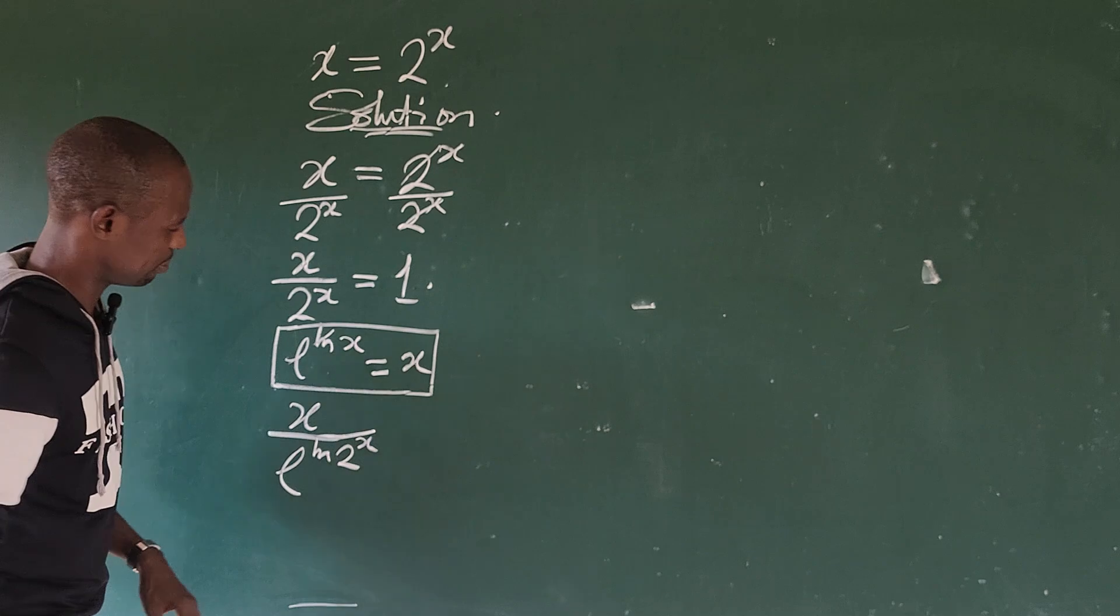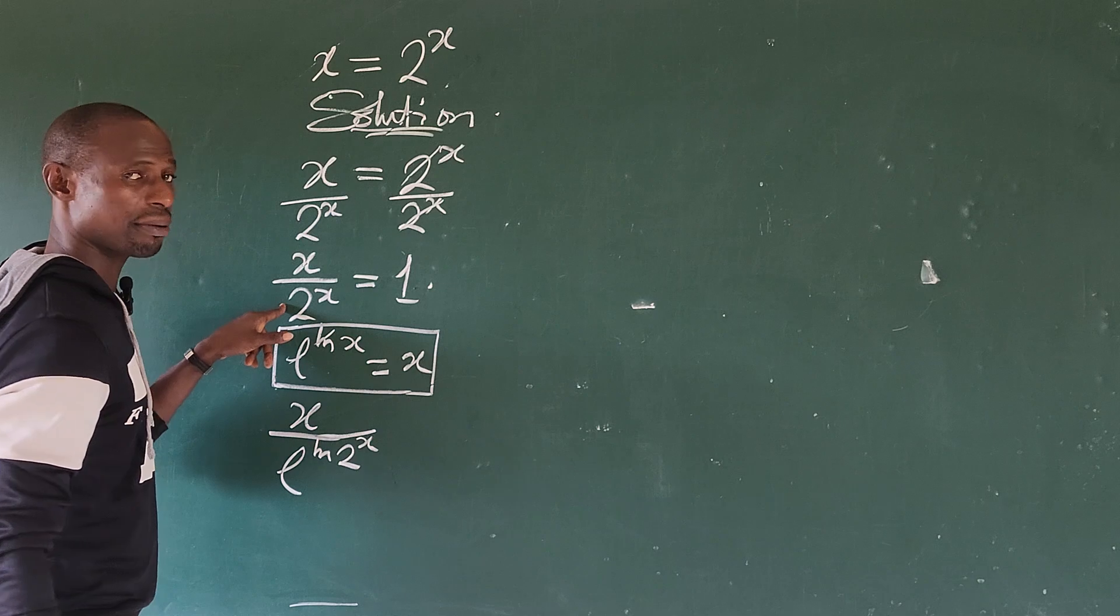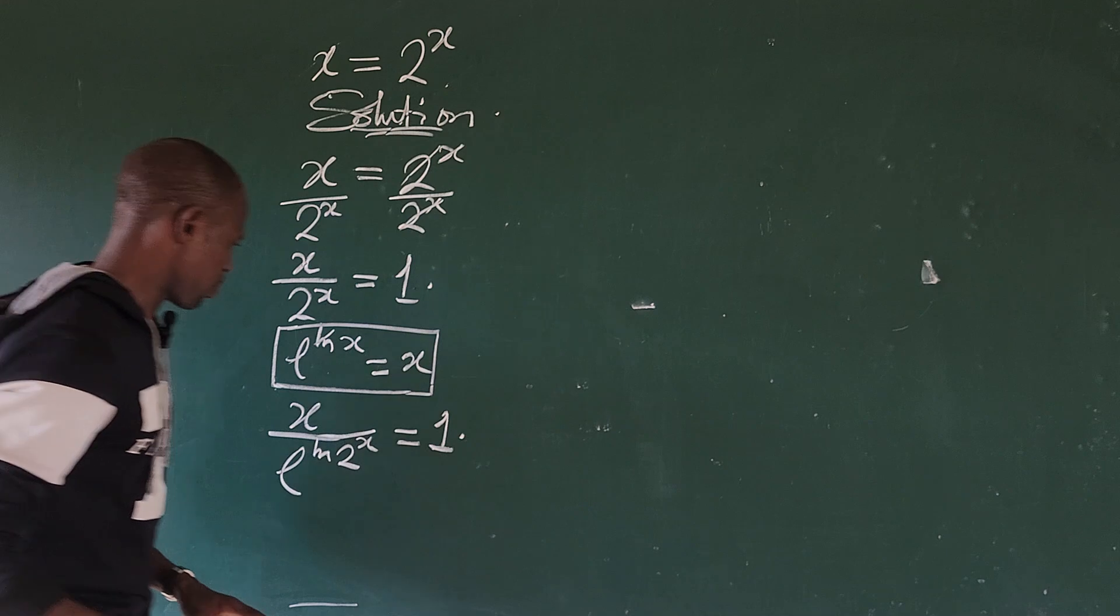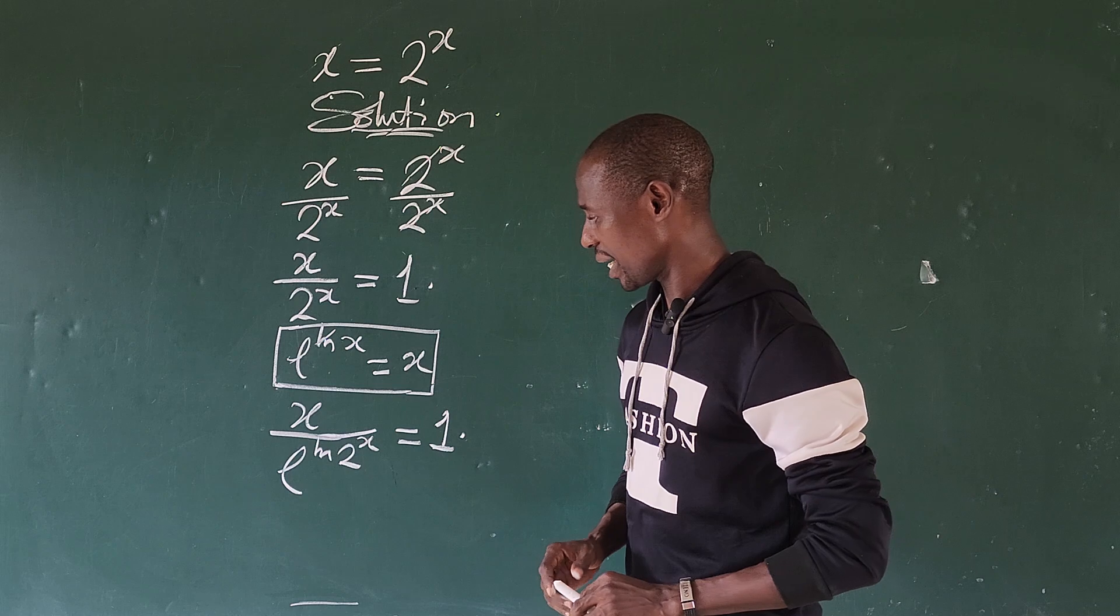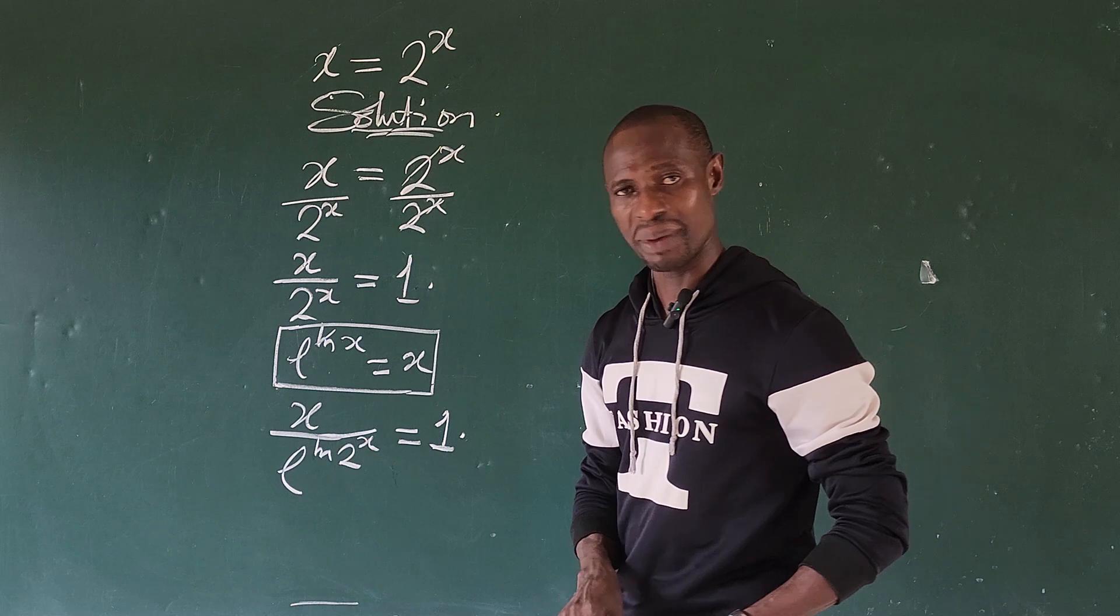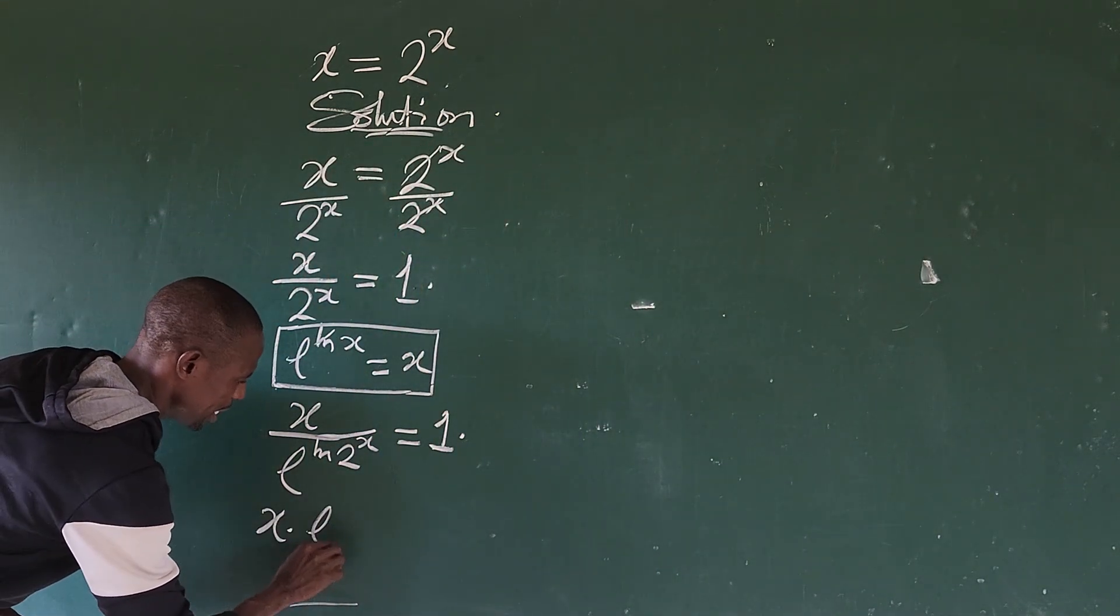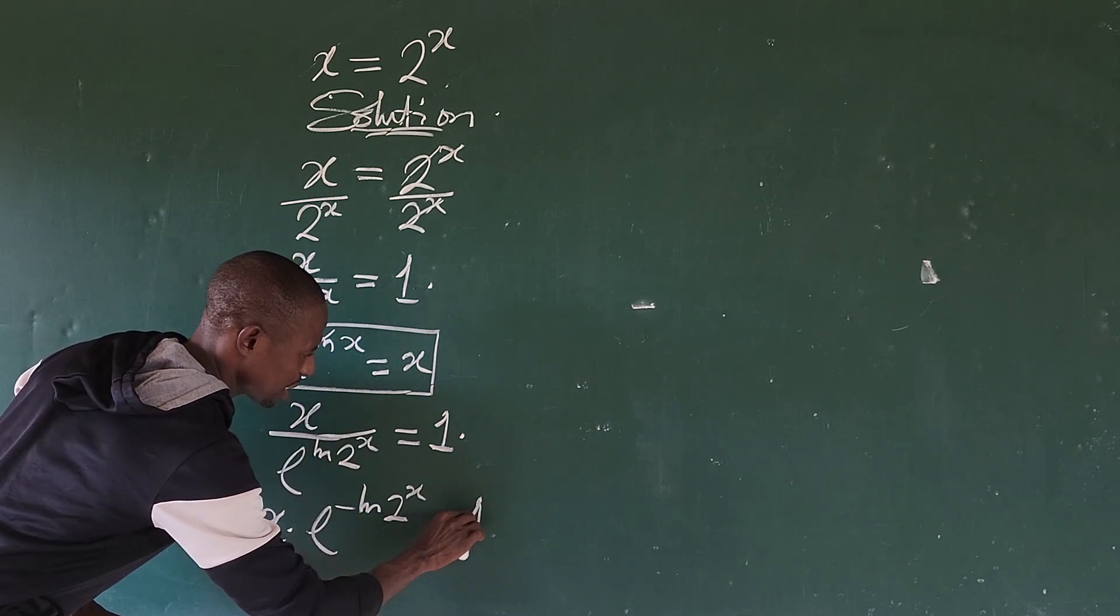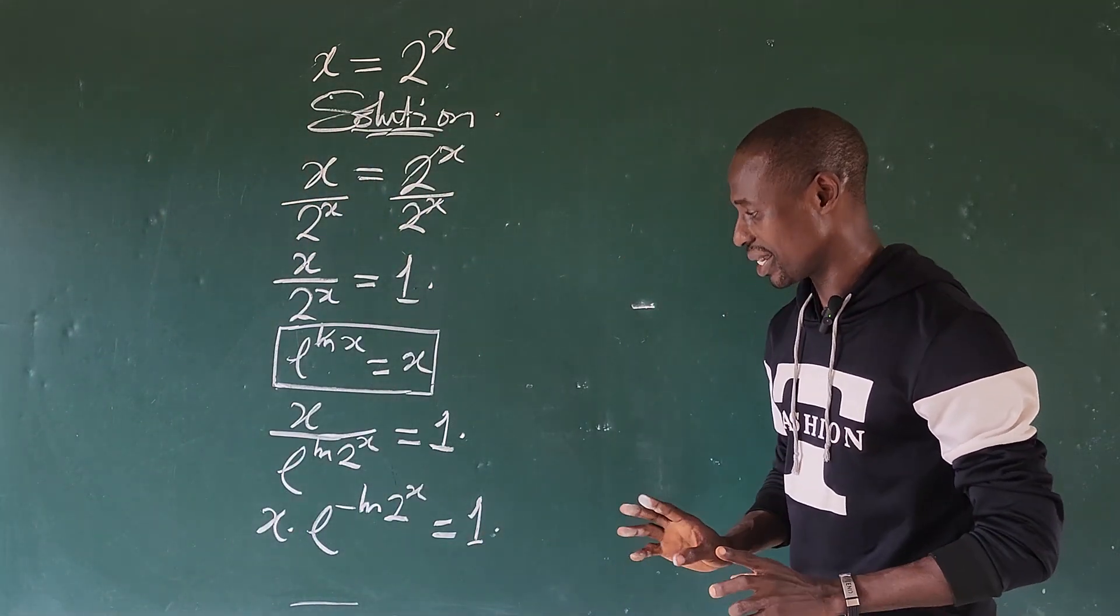We wrote this way because if I cancel this, it comes up with 2 to the power of x, which is down here. Everything equal to positive 1. What do we do next? According to the law of indices, I want to remove this divisional sign here. We turn this power to minus, so we're writing this as x times e to the power of minus ln of 2 to the power of x equal to positive 1.